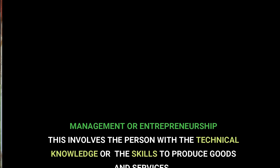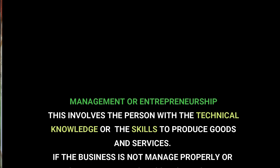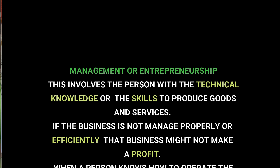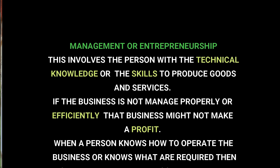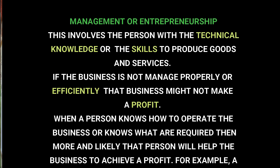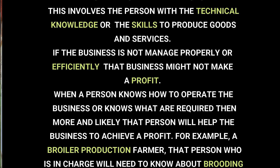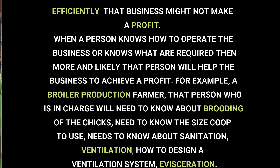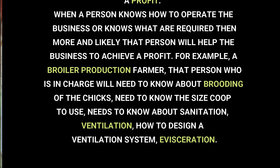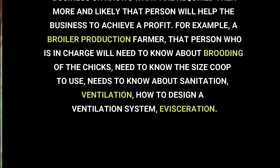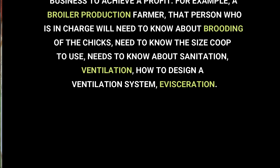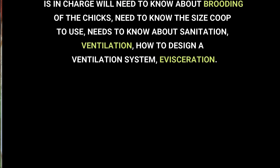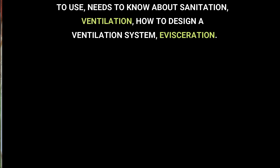Management or entrepreneurship involves the person with technical knowledge or the skills to produce goods and services. This person is very important because if the business is not managed properly or efficiently, it might not make a profit. When a person knows how to operate the business, they will help it achieve a profit. For example, a poultry production farmer responsible for management and supervision needs to know about brooding of chicks, sizing, sanitation, ventilation, how to design the structure for good ventilation, as well as slaughtering and evisceration.